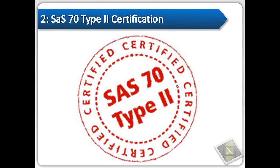The second item is SAS 70 Type 2 Certification. An accounting company comes into the cloud-based provider and does an audit regularly, going through their own checklist. This is kind of the gold standard for cloud-based computing. If someone has SAS 70 Type 2 Certification, they've done the right things, they've got money behind them, they set everything up properly, and I would feel fairly confident they'll be around for a while. This is a yes-or-no question — you either have SAS 70 Certification or you don't.